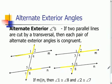Okay, we are going to talk about parallel lines and alternate exterior angles. If two parallel lines are cut by a transversal, then each pair of alternate exterior angles is congruent.